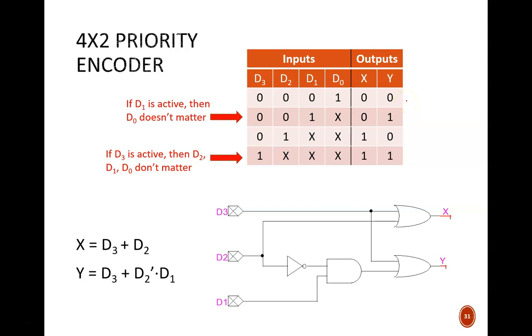Now for the equations. x will be high for two cases if either d3 or d2 are high. What if both d3 and d2 are high? That would fall under the cases covered by the bottom row, so x would still be high. This logic suggests an OR gate.